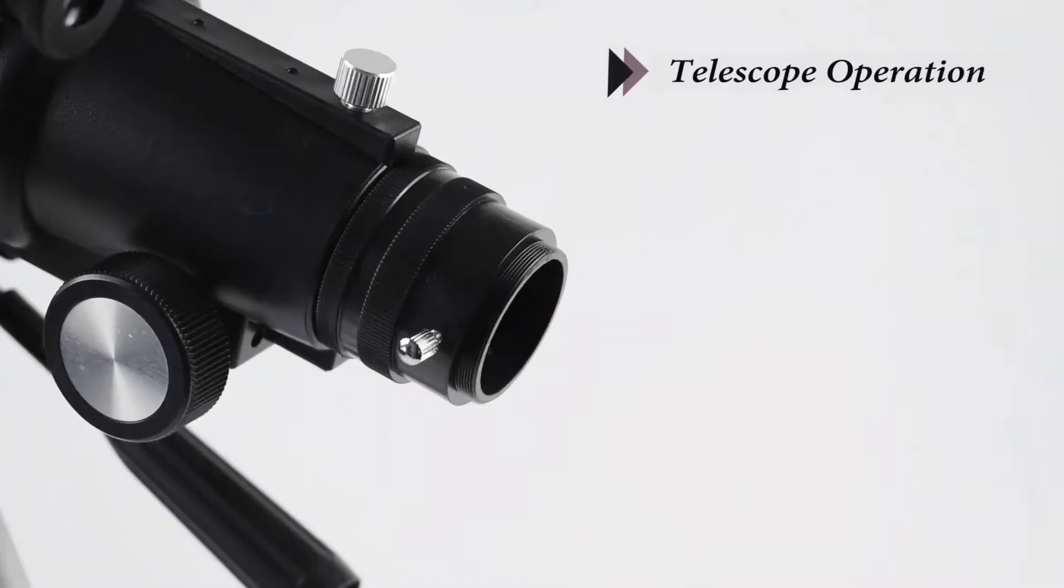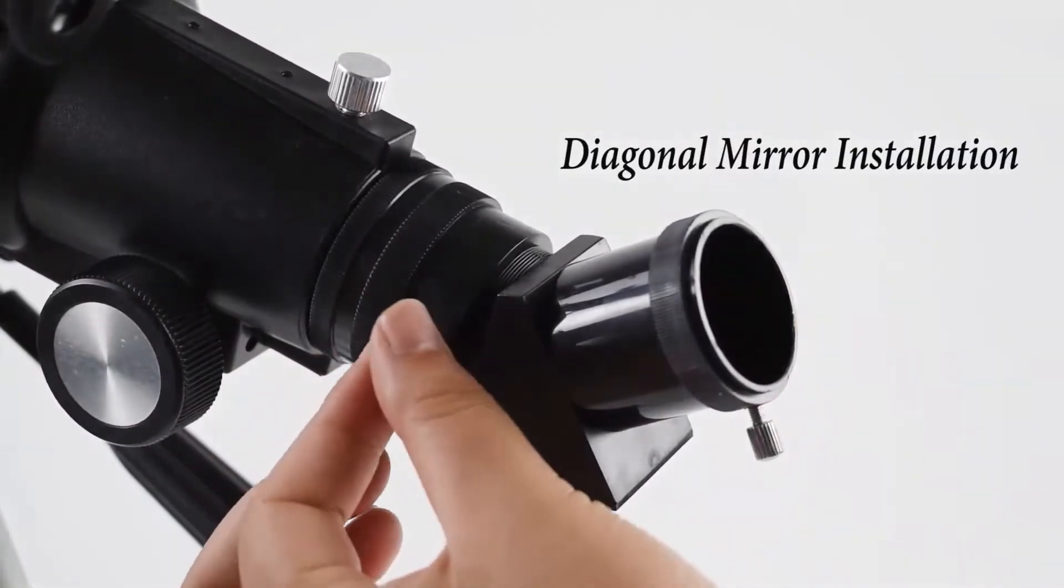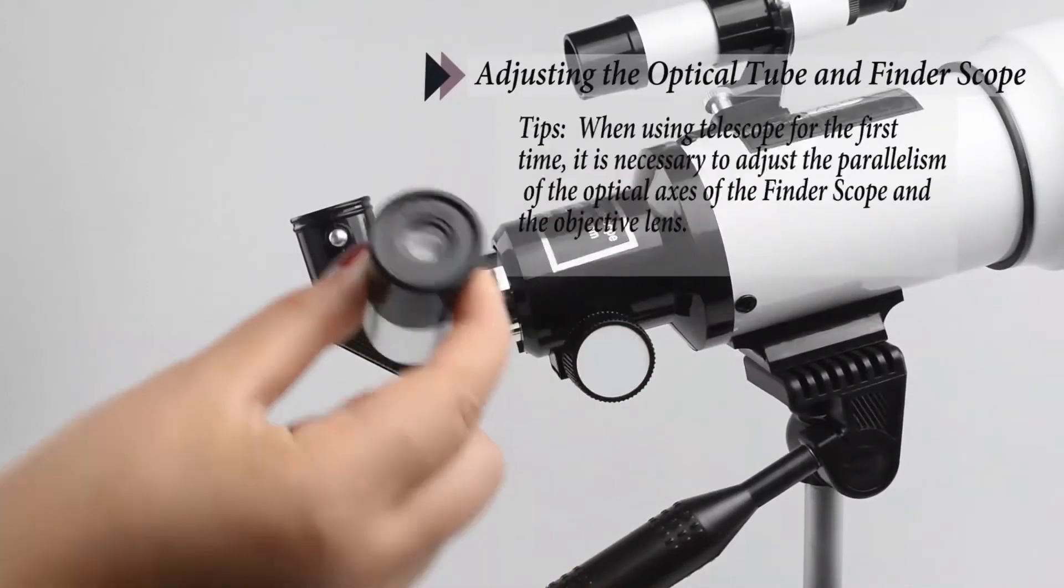Insert the diagonal mirror into the end of the telescope tube. Install the 20mm eyepiece into the diagonal mirror and tighten the set screw.